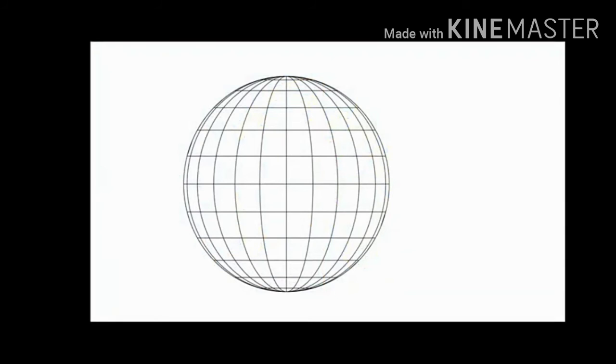The parallels and meridians cross each other and form a network called grid. The point at which the parallels and meridians cross each other denotes the location of that place.